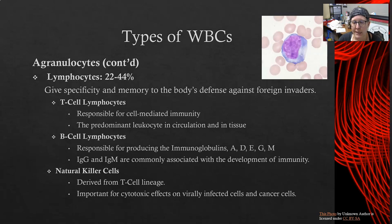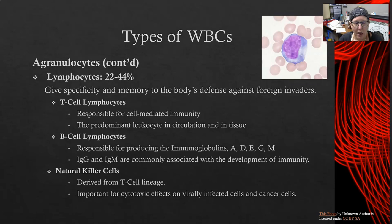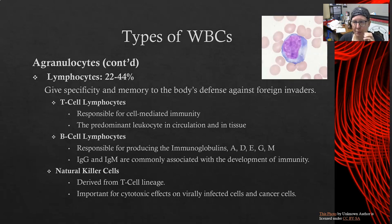B-cell lymphocytes produce antibodies known as immunoglobulins. There are five categories: IgA, IgD, IgE, IgG, and IgM. IgM is the first-response antibody; IgG is the more specific antibody that persists for weeks to months or even years. Natural killer cells are derived from the T-cell lineage and have a cytotoxic effect on virally infected and cancer cells, but they are part of innate immunity — already programmed to generally look for those threats — whereas T-cells can be specifically programmed against a particular virus. That wraps up all of our white cells.